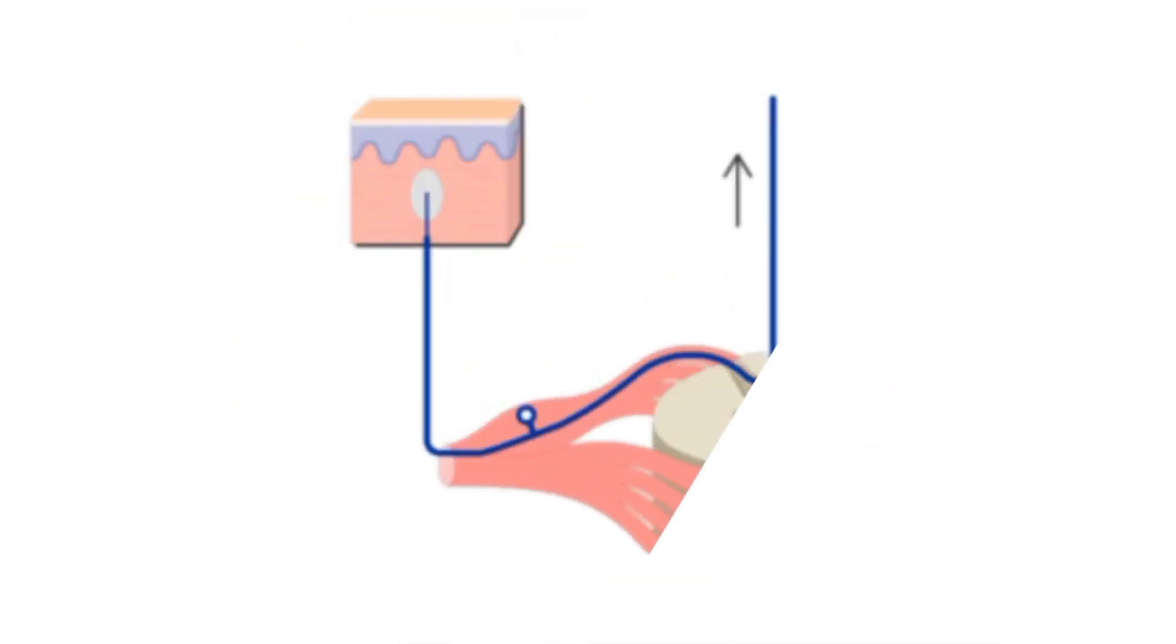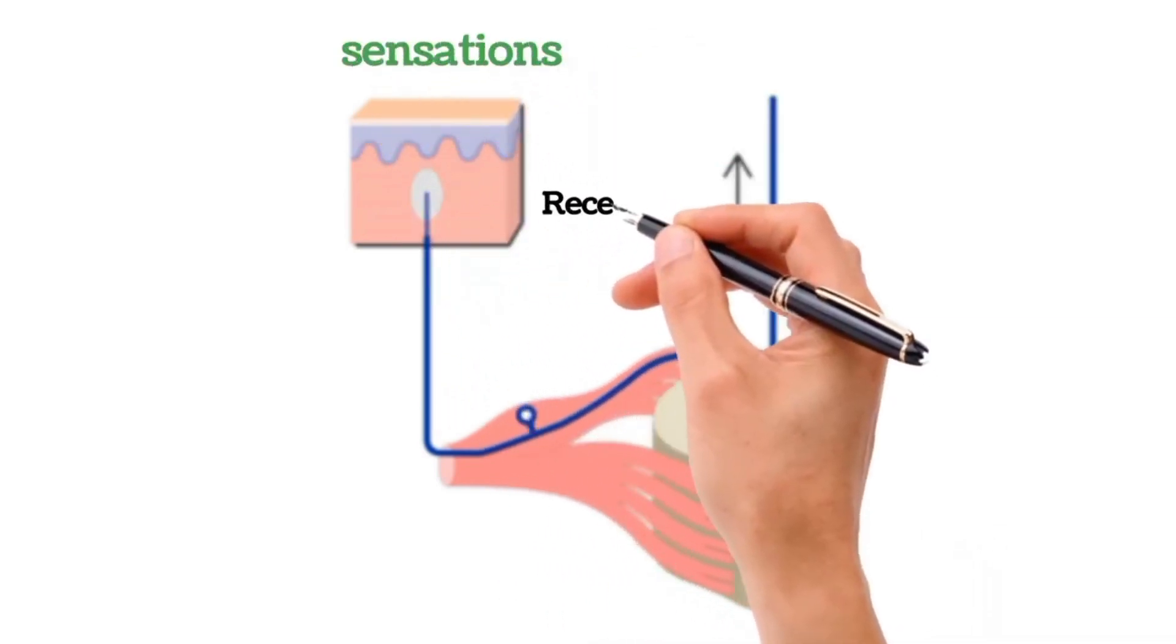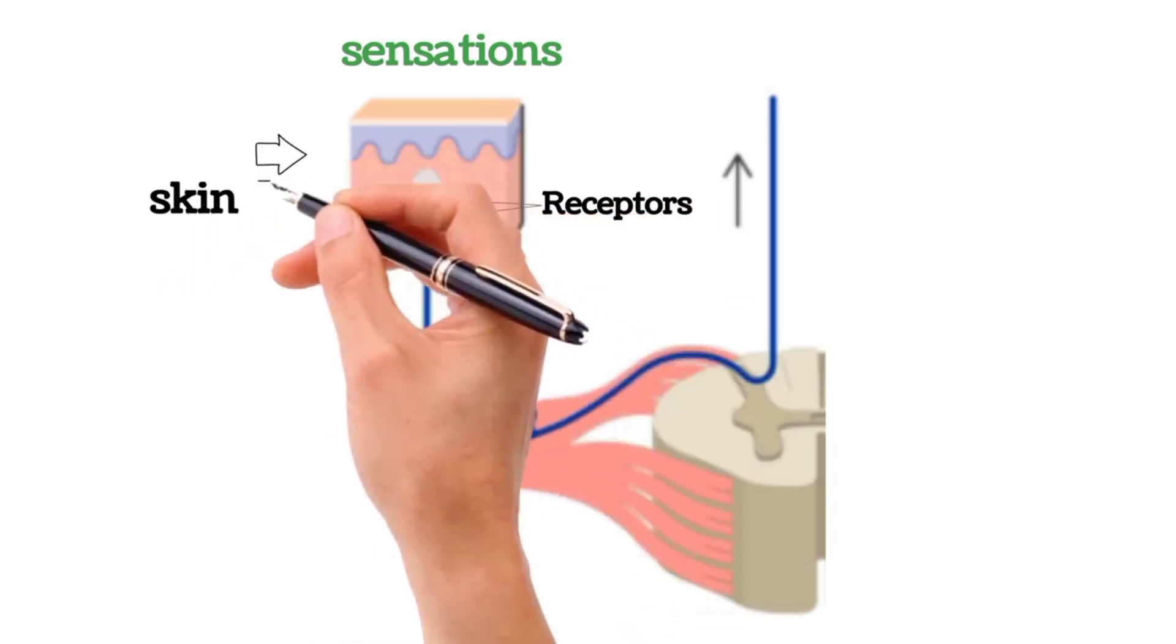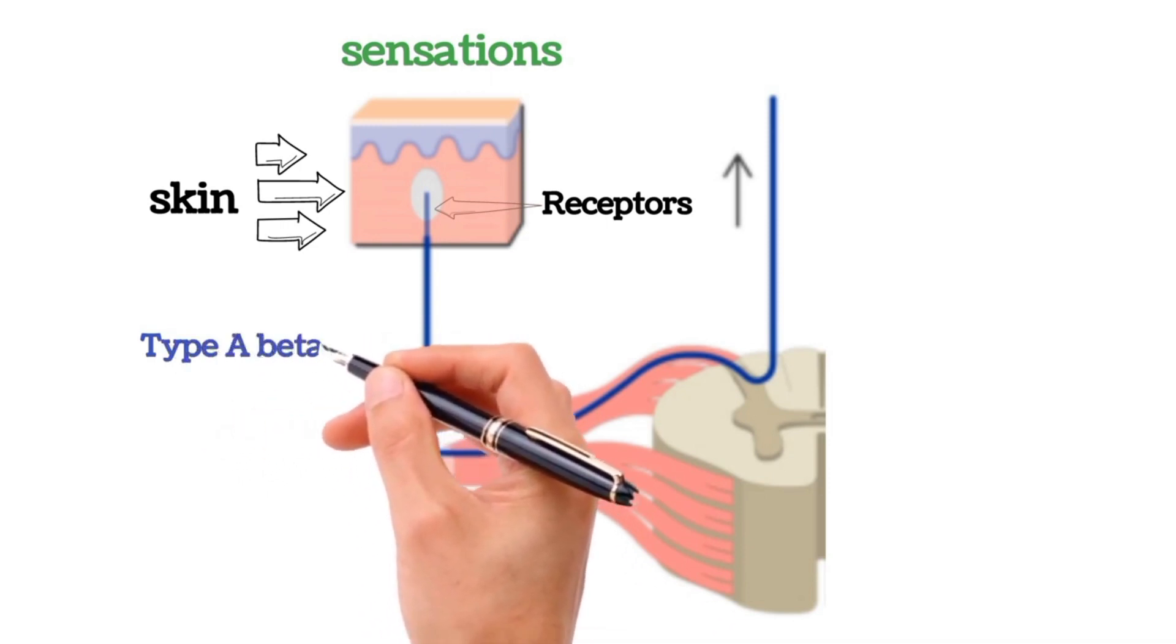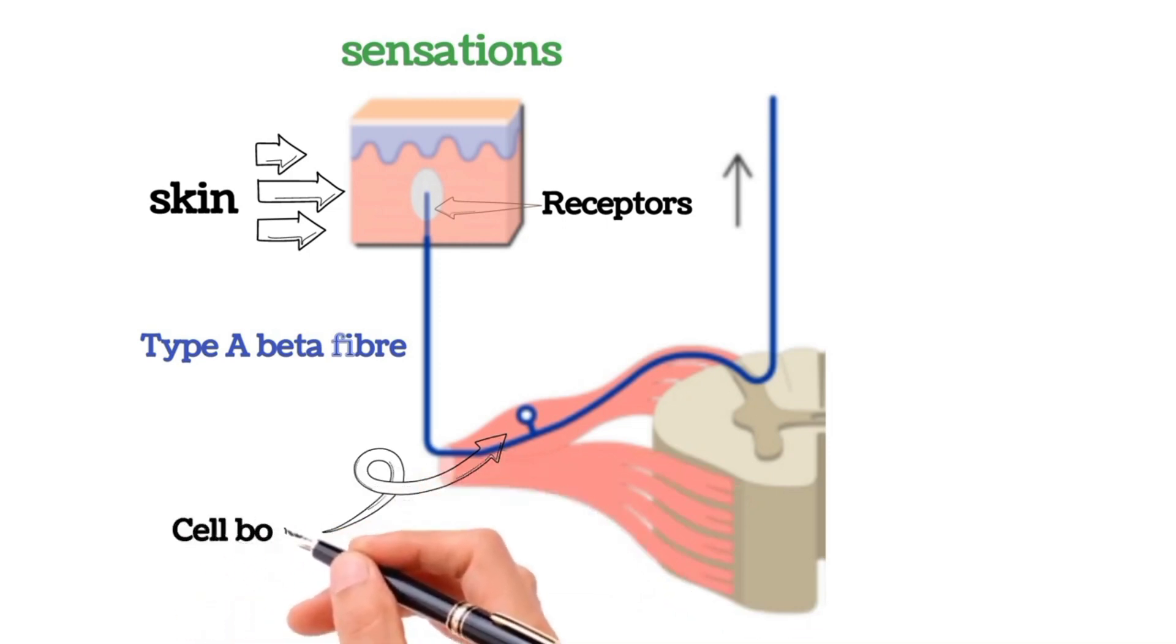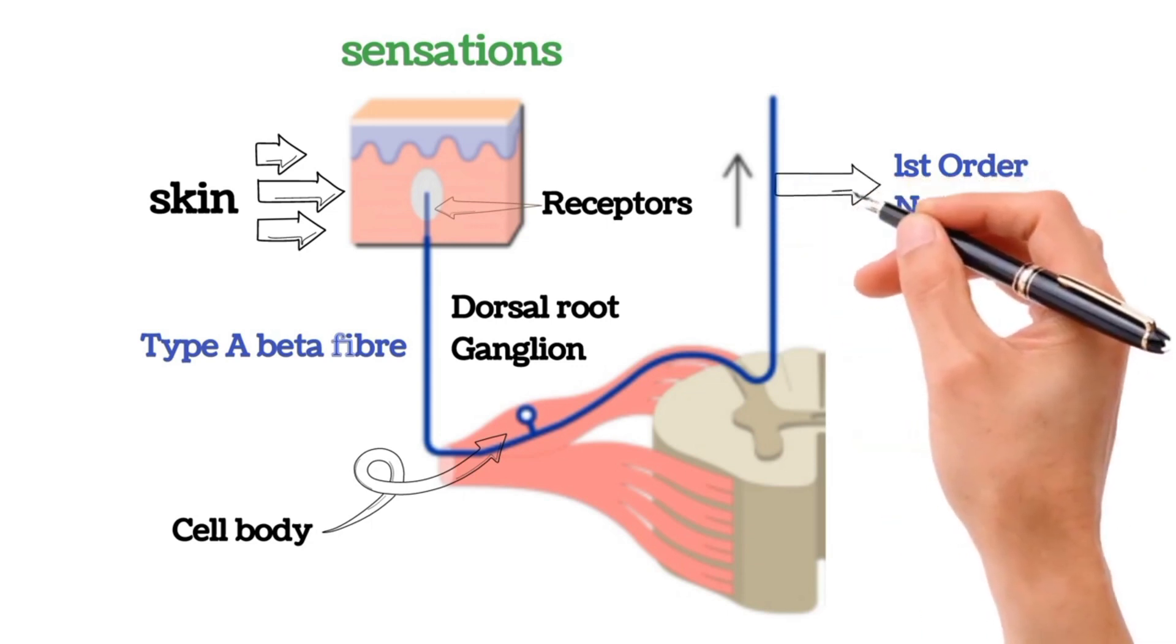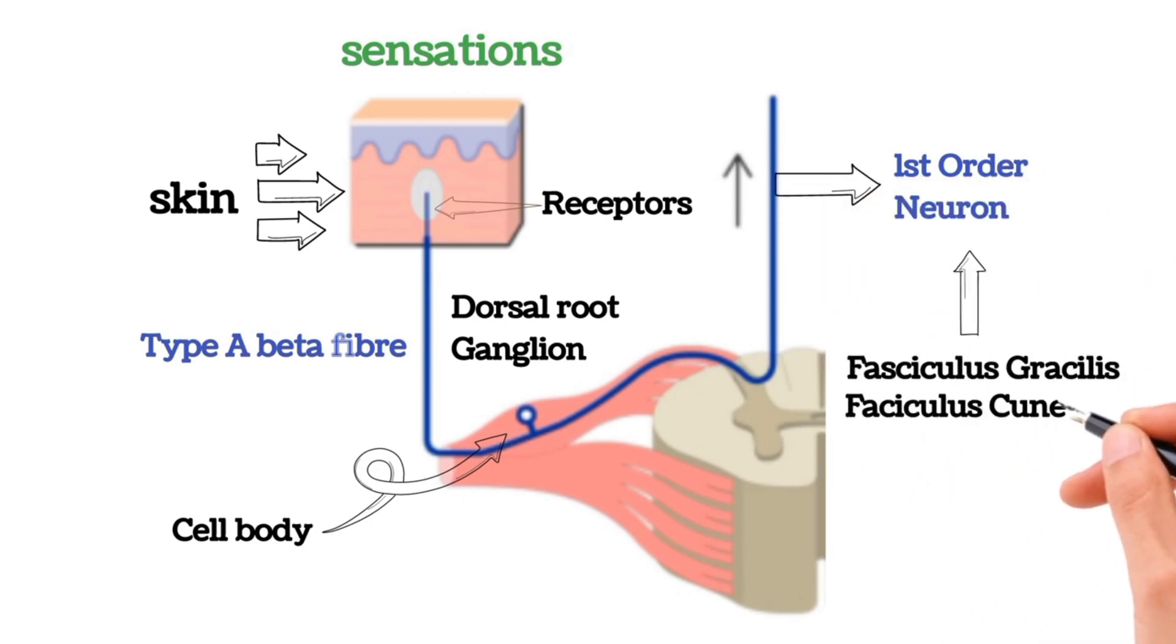Now we will discuss the pathway of DCML. The sensations are detected by specialized receptors that are Meissner's corpuscles, Pacinian corpuscles and Merkel discs in skin and are carried by type A beta fibers towards the spinal cord. These nerve fibers are pseudounipolar neurons with their cell bodies in the dorsal root ganglion. These first order neurons ascend ipsilaterally in fasciculus gracilis and fasciculus cuneatus.